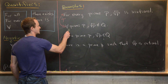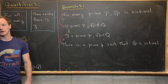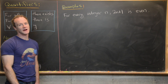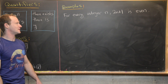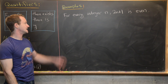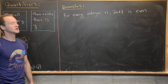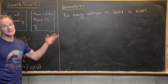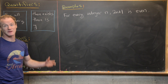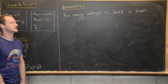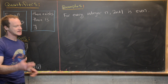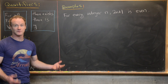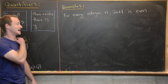We just negated a true statement, so we ended up with a false statement. These two symbolic/English forms are the same and they are true; these two are the same and they are false — they are the negation of the statements above. For our next example, we're going to start with a statement that is false: 'For every integer n, 2n+1 is even.' That is definitely false, because we know that 2n+1 is odd, and evenness and oddness of numbers is disjoint.